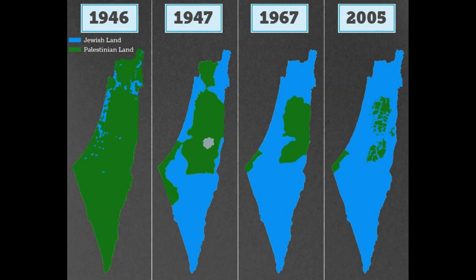The Israeli-Palestinian conflict is one of the most intractable conflicts in the world — a conflict that has caused immense suffering on both sides. The only way to resolve the conflict is through a two-state solution, with Israel and Palestine living side by side in peace and security. However, there are a number of obstacles to achieving this.